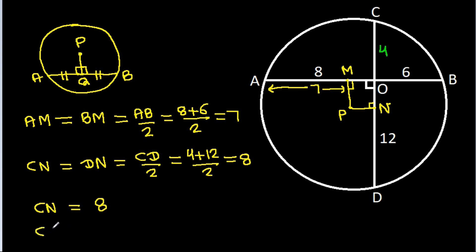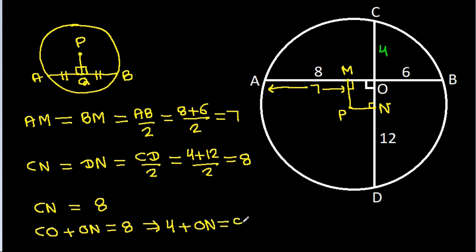And CN equals CO plus ON, which is 8. And CO is 4, so CO plus ON equals 8, which gives ON equals 4.